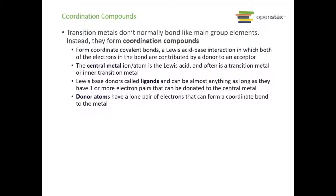The Lewis base donors are called ligands — some say 'LY-gands,' some say 'LIG-ands.' Both are correct; chemists tend to say 'LY-gand' and biologists tend to say 'LIG-and.' These ligands can be almost anything as long as they have one or more electron pairs to donate to the central metal. The donor atoms on the ligands have a lone pair of electrons that can form a coordinate bond to the metal — you must have a lone pair for these coordinate bonds to form.